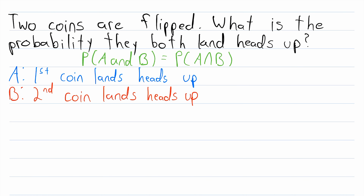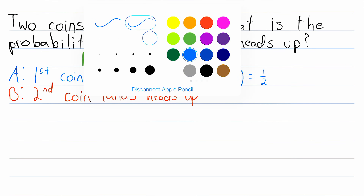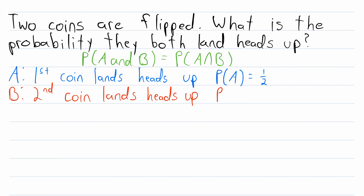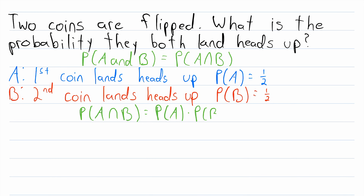Well, there's a good chance that you've solved a problem like this before. You might be thinking the probability that the first coin lands heads up — the probability of A — is just one half, and the probability that the second coin lands heads up — the probability of B — is also one half. So to find the probability that both A and B occur, we just multiply their individual probabilities: the probability of A times the probability of B, which is one half times one half, which is one fourth. And that is exactly correct.